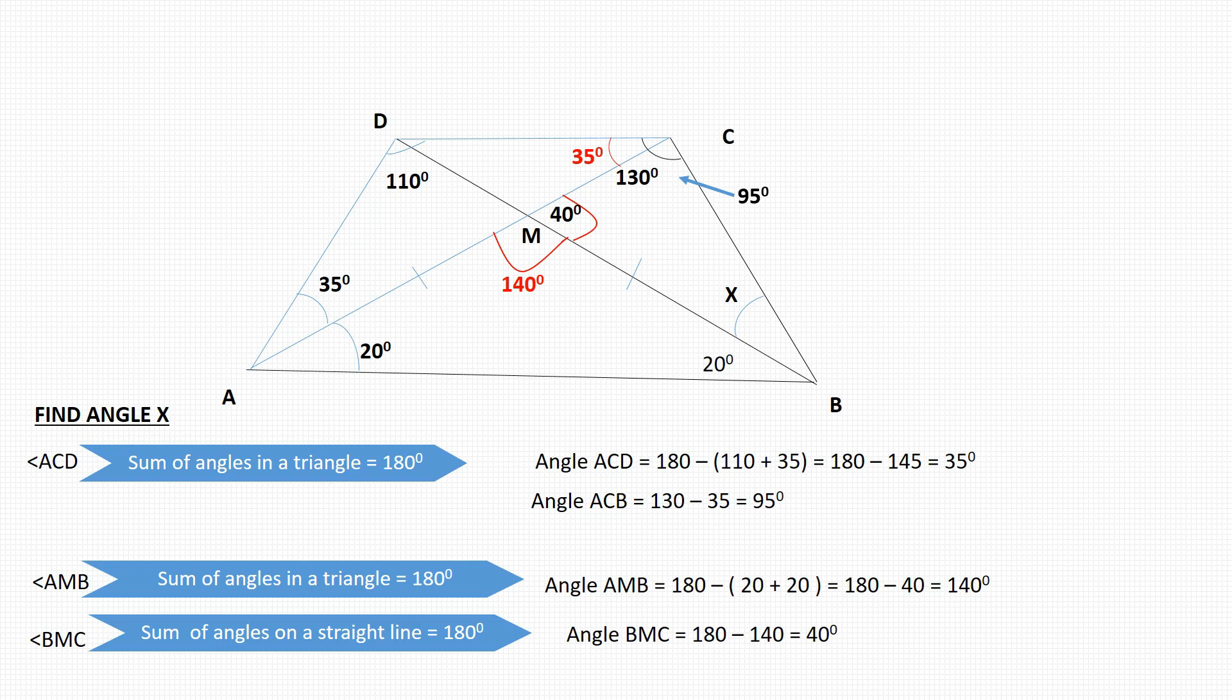So finally, we need to find angle X. To find it, consider that triangle BMC. We have two angles, 95 and 40 degrees. So what is the third angle, which is the X we are looking for?